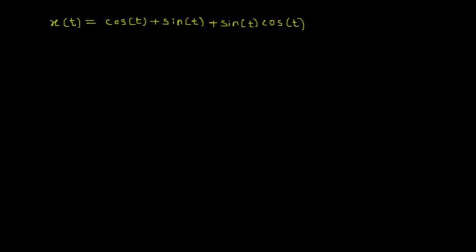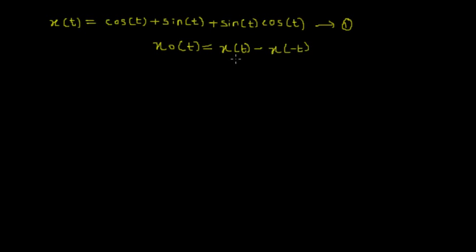Now the next task is to find the odd part of the signal. I represent the odd part as xo(t), which is equal to x(t) minus x(-t), all divided by 2. Again, I know what x(t) is but I need to find x(-t). To find x(-t), I replace t with minus t in equation 1.